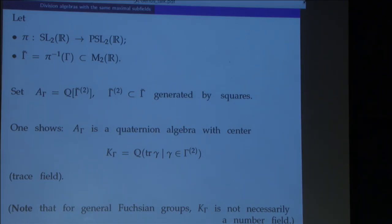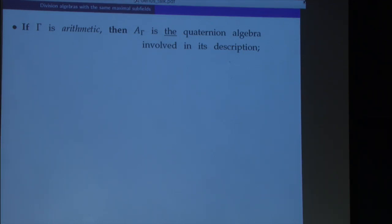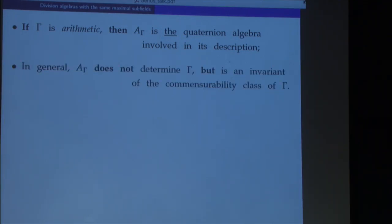For general Fuchsian groups the center doesn't have to be a number field — it can be any finitely generated subfield of R. The significance of this algebra is the following: if our subgroup is arithmetic, then this algebra is precisely the quaternion algebra needed for its description, and it uniquely determines our subgroup. In more general situations, the algebra does not determine the subgroup, but at least it is an invariant of the commensurability class — a weak invariant, but some invariant.